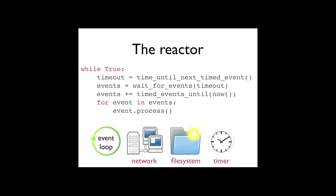Event-driven programs are a good match for applications with many fairly independent tasks. If you've ever had horrible buggy threaded programs, an event-driven model may be a good alternative. That's what Twisted is based on. The core of Twisted's event loop is called the reactor. All it does is wait for events and dispatch them to callbacks that are waiting to process those events. The Twisted reactor knows about network events, file system events, and timers, and provides a uniform abstraction on top of underlying operating system APIs — like select or ePoll on Linux, I/O completion ports on Windows, or KQueue on FreeBSD derivatives.